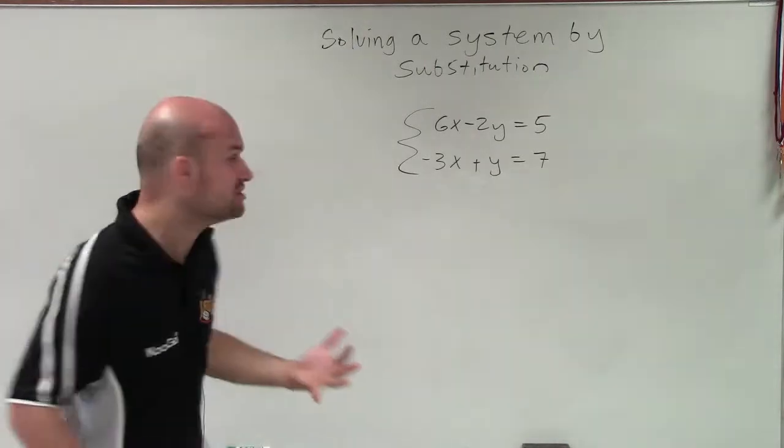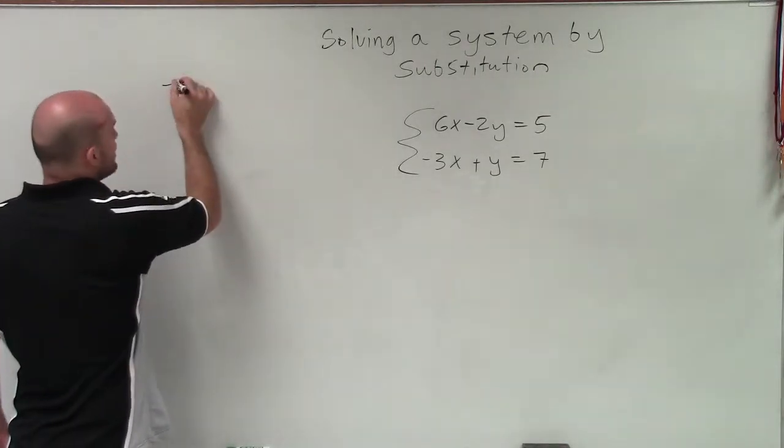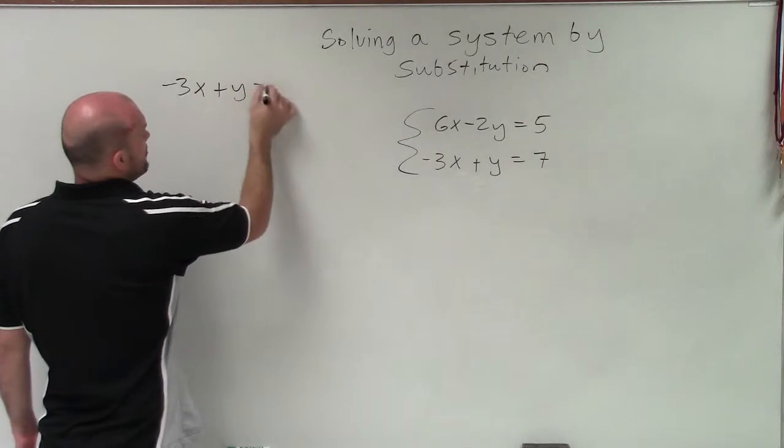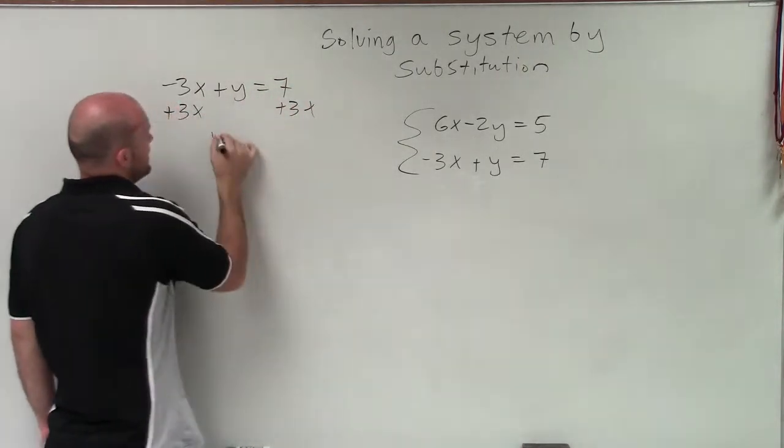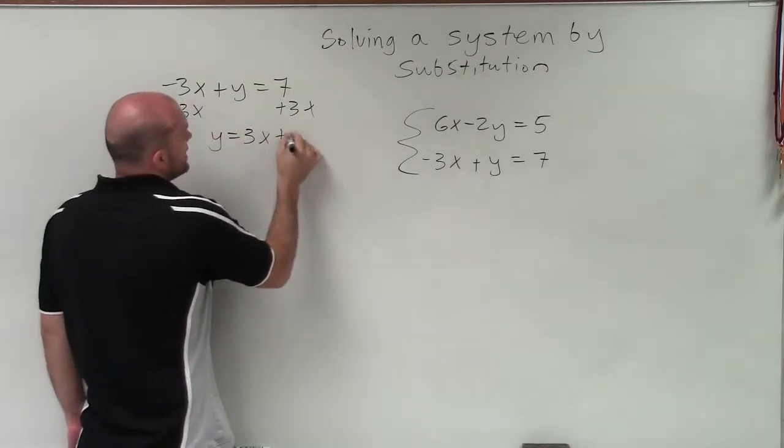Therefore, that's the variable I'm going to isolate. I'll write negative 3x plus y equals 7. Now, isolating this variable, I'll add 3x to both sides, and I get y equals 3x plus 7.